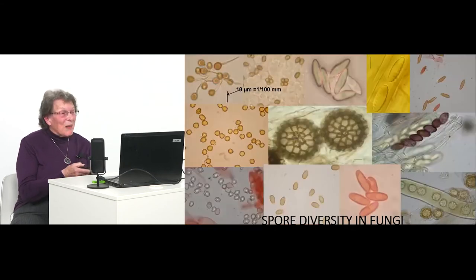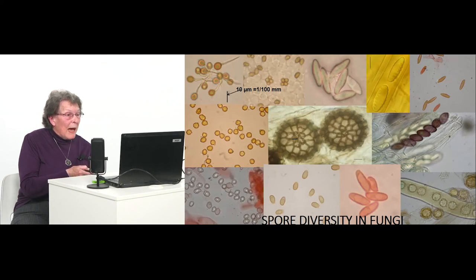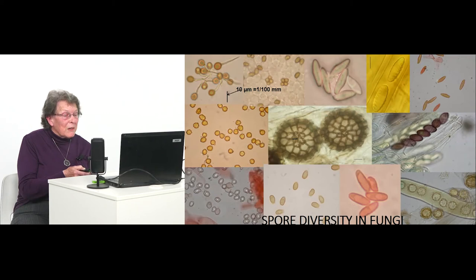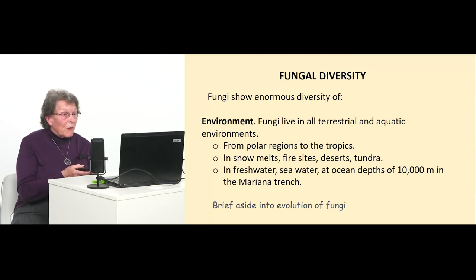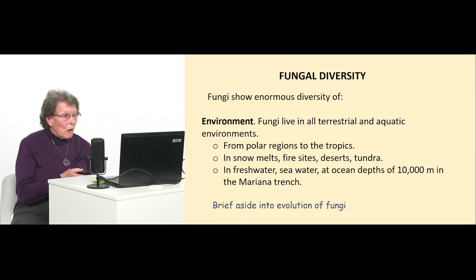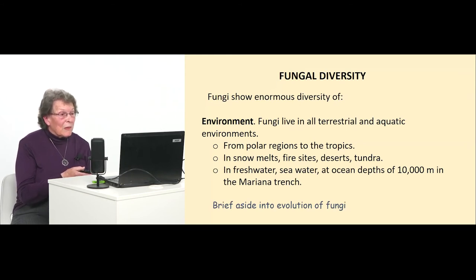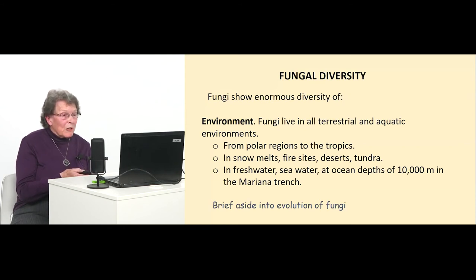I love looking at spores — we've got some with tails, some round, some spiny, some angled, some elongated, some that look like little loaves. Some fungi have blackened spore covers making them more able to withstand high temperatures. Fungi also grow in an enormous variety of places: on all land surfaces and in aquatic environments, from polar regions to the tropics, in snowmelts, at fire sites, in deserts, in tundra, in fresh water, in sea water — even found at ocean depths of 10,000 metres in the Mariana Trench.